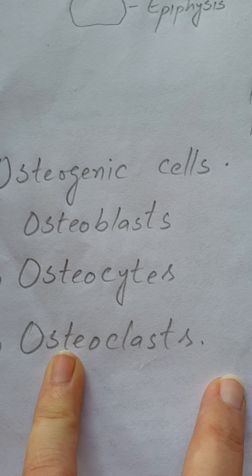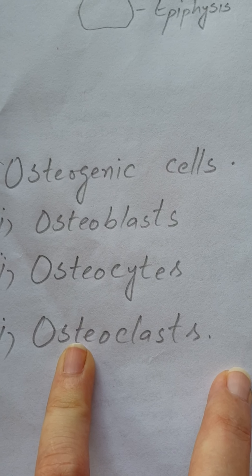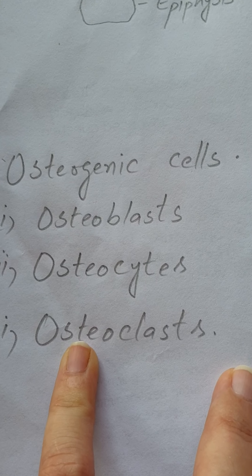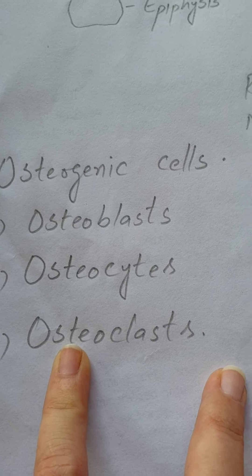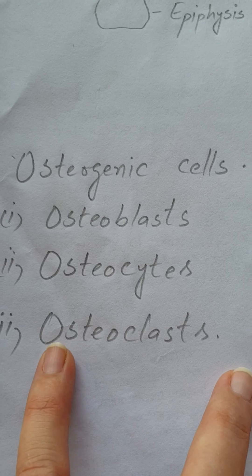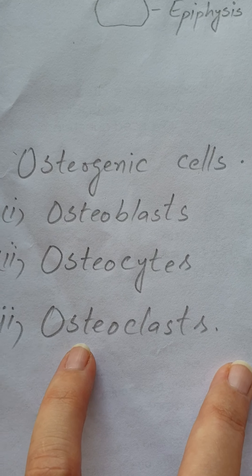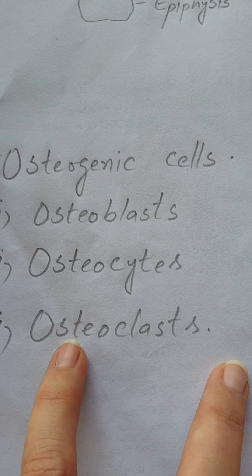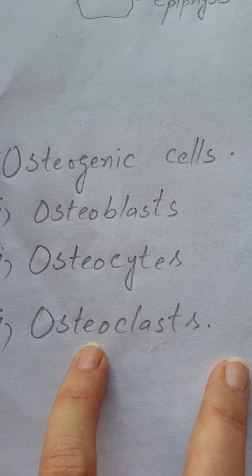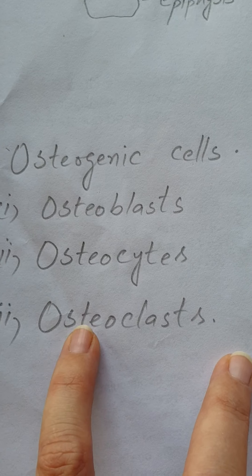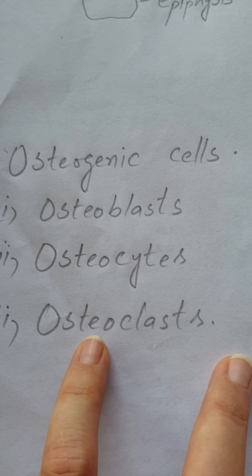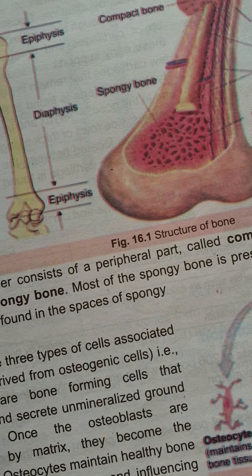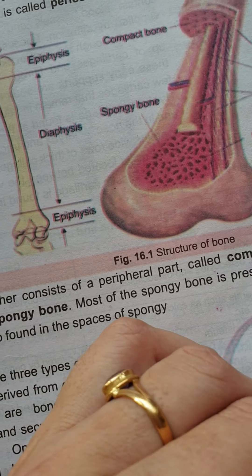Osteoclasts are the bone-engulfing cells. When there is a need for bone repair, or when body growth occurs, old bones are destroyed and new bone material is used. Osteoclasts engulf the old bone cells and then help form new ones. This covers the bones of the human skeleton.